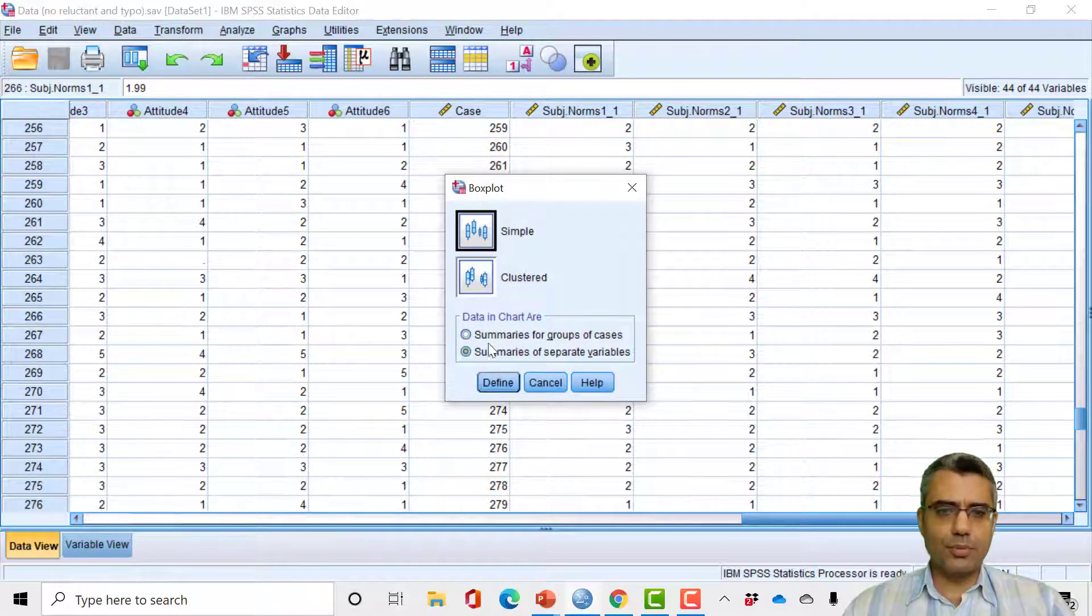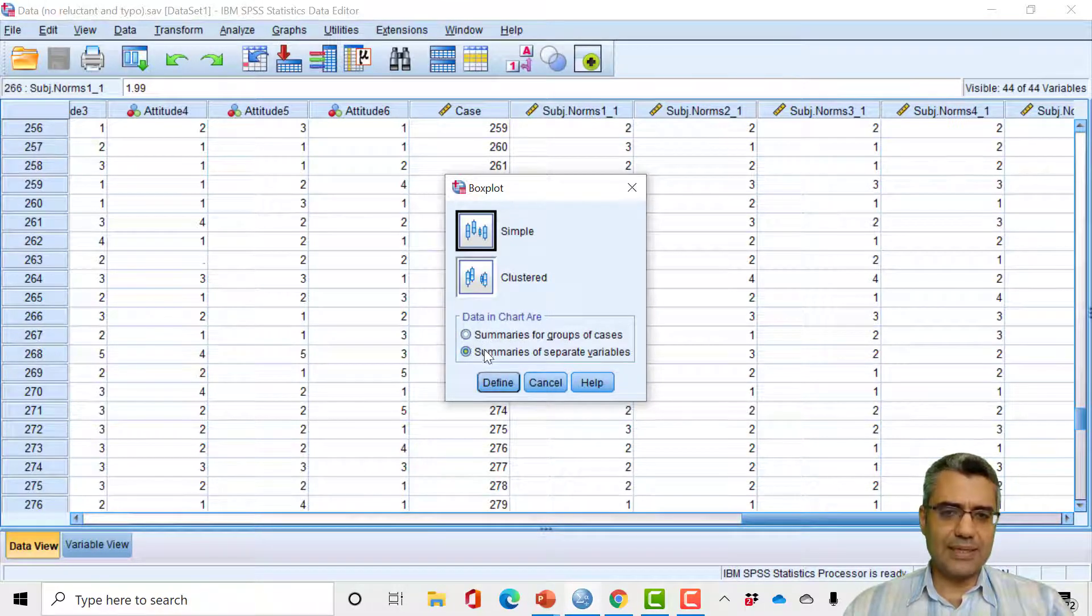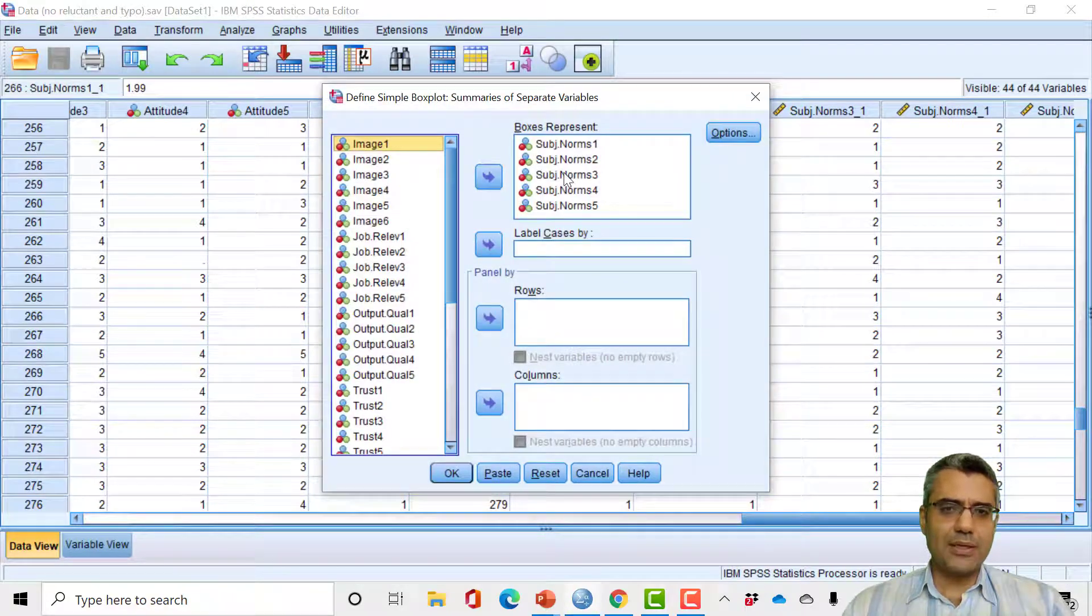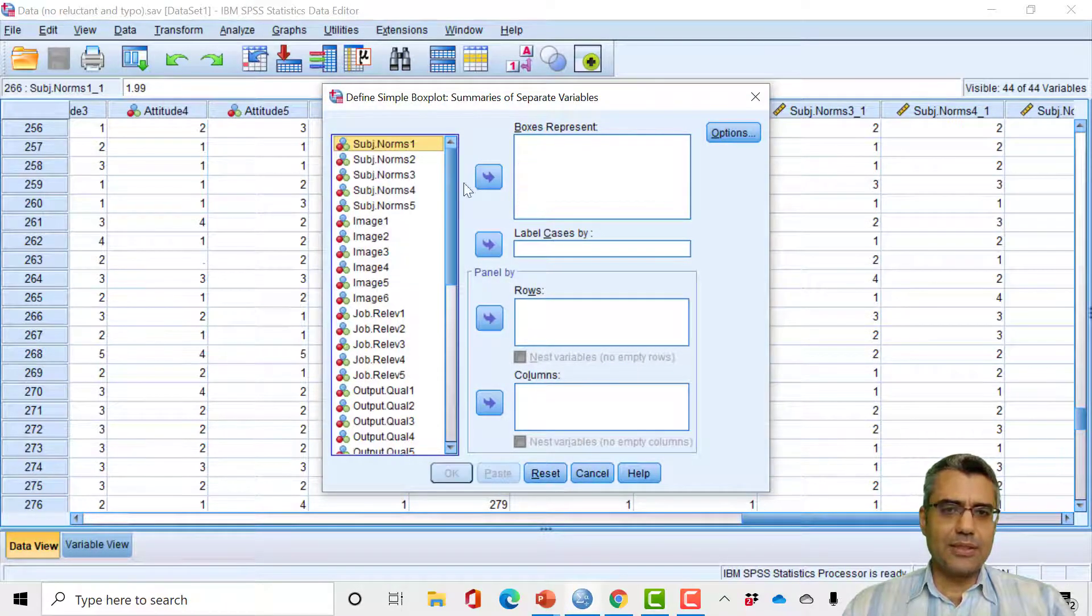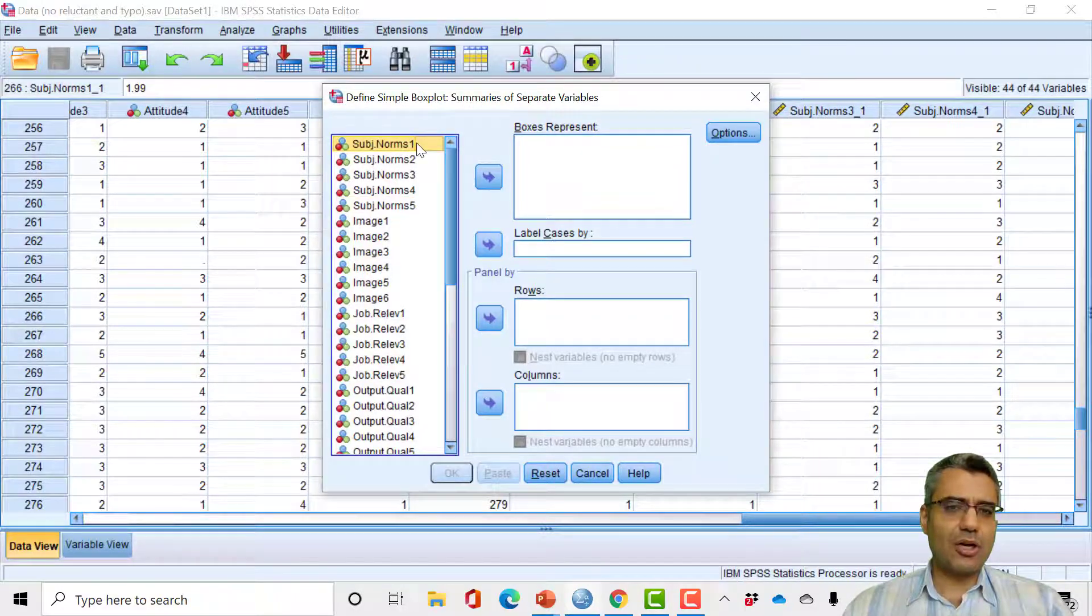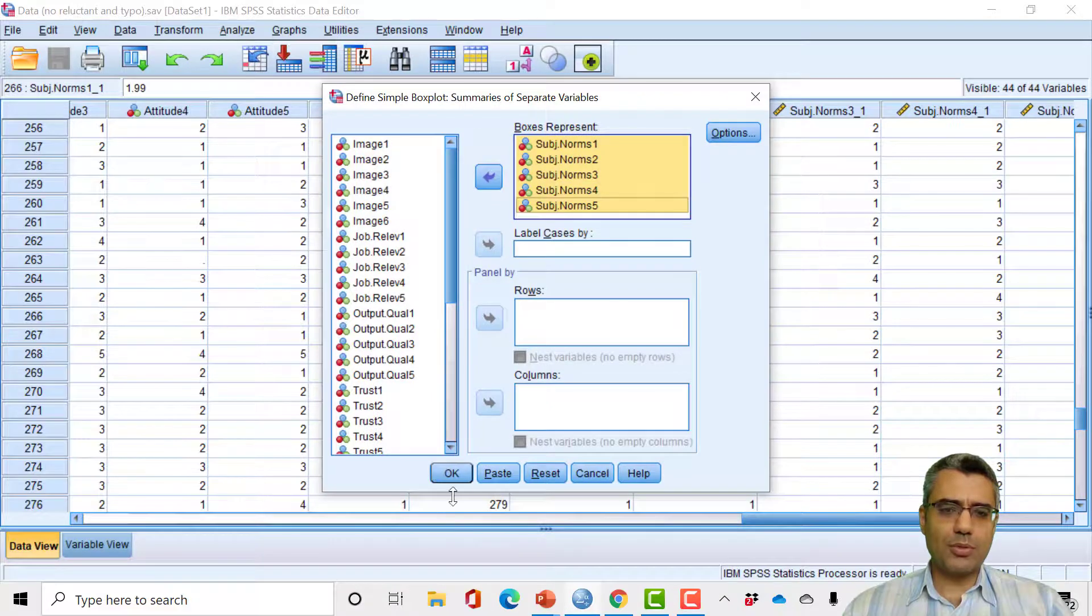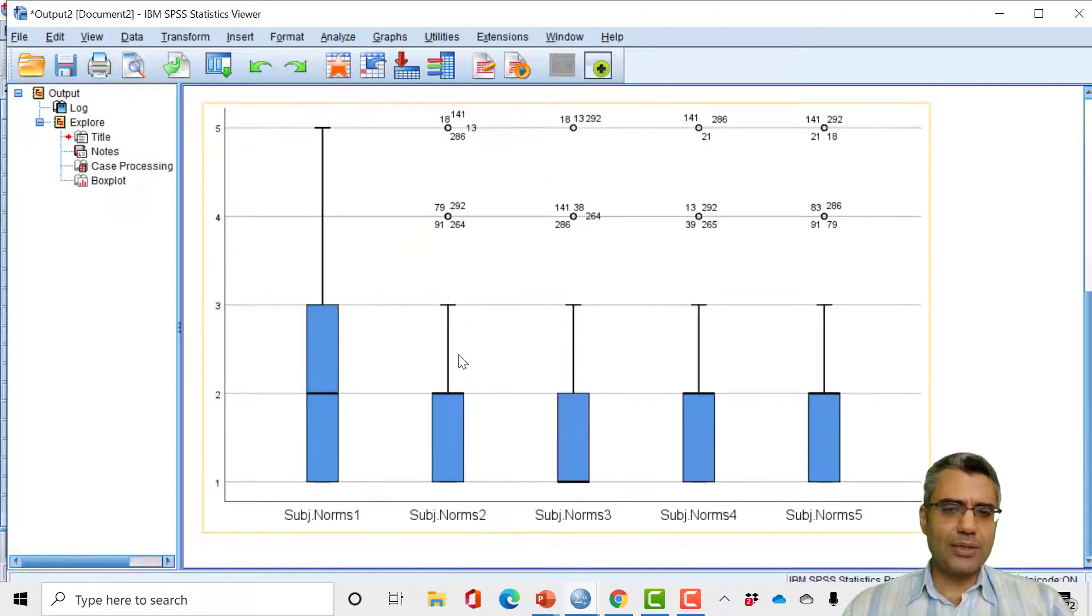So you select the first one and the last one, then define. Now here I reset. Then suppose I want to identify the univariate outliers for Subjective Norm 1, Subjective Norm 2, 3, 4, 5, and I move them to this box and hit OK. What do you get? There are some box plots. So how to interpret these box plots?